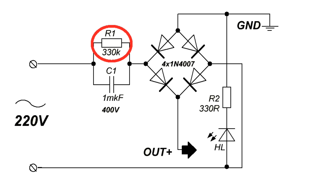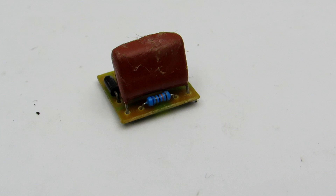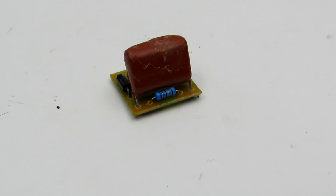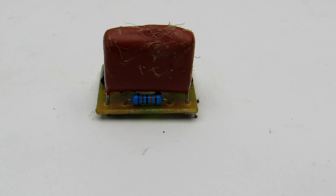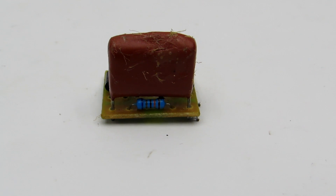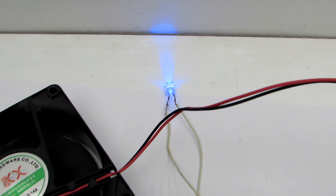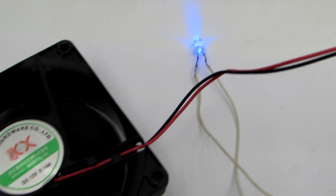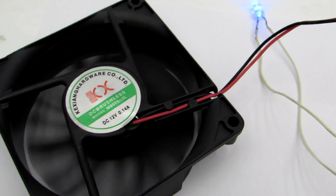A resistor in parallel with the capacitor is for its discharge after disconnecting from the network. A film capacitor with a voltage of at least 250 volts — preferably 400 volts — must be used. The LED is powered by the same circuit, which is assembled on a compact board.